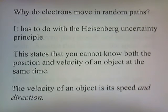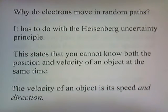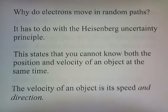Why do electrons move in random paths? It has to do with the Heisenberg Uncertainty Principle. This states that you cannot know both the position and velocity of an object at the same time. The velocity of an object is its speed and its direction.